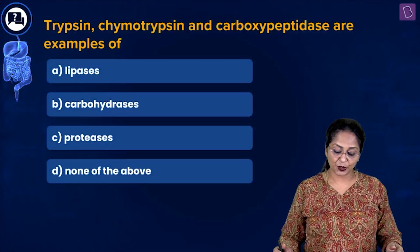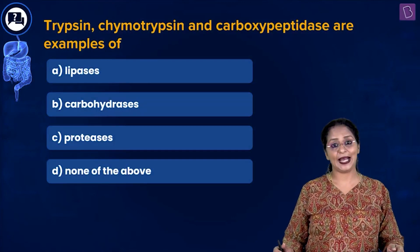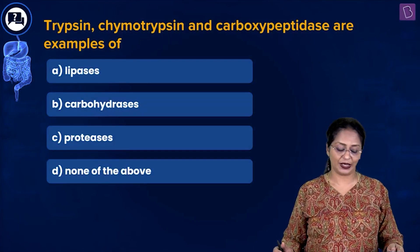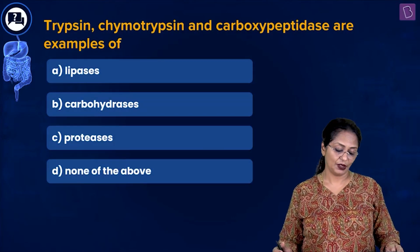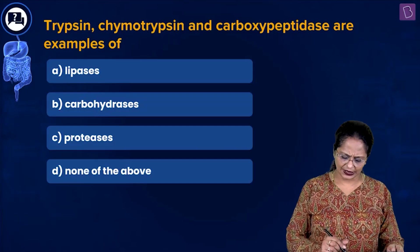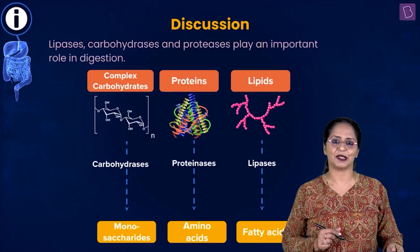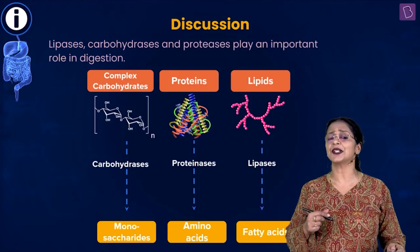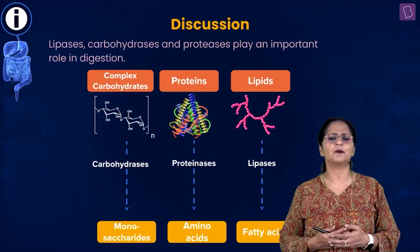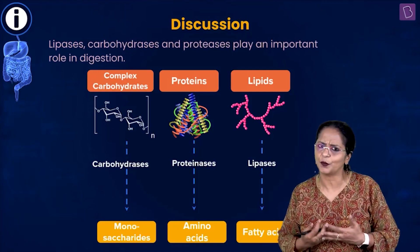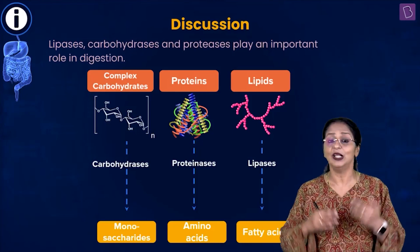Let's now look at this question: trypsin, chymotrypsin, and carboxypeptidase are examples of A: lipases, B: carbohydrases, C: proteases, or D: none of the above. Options A, B, and C are all names of enzymes. We're talking about enzymes because digestion — the breaking down of complex substances into simple substances so they can be absorbed — is always under the influence of enzymes, which is why it is also called chemical digestion.